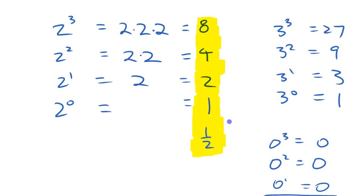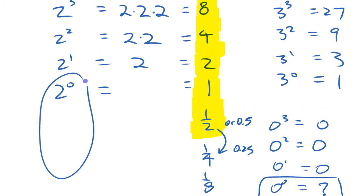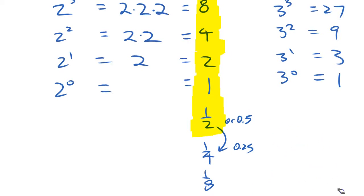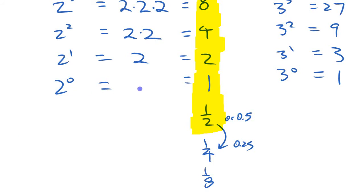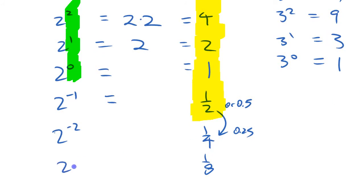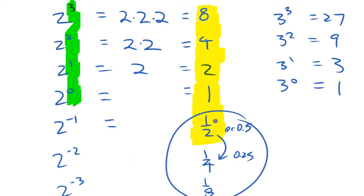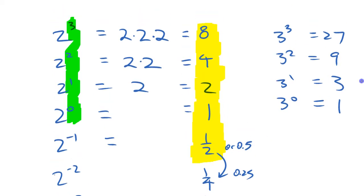Keep going: a quarter (0.25), an eighth (0.125). But what should the exponent be on the other side? Following the pattern 3, 2, 1, 0, the next should be negative 1. Then 2 to the negative 2, 2 to the negative 3. It's a tough one because when you see these negatives, it seems like the number should be negative — but it's not. The number is not negative. That exponent doesn't mean whether the number is positive or negative.